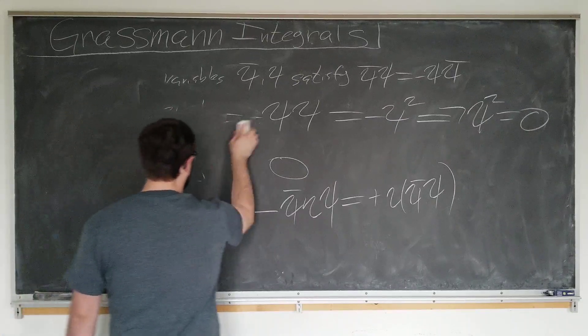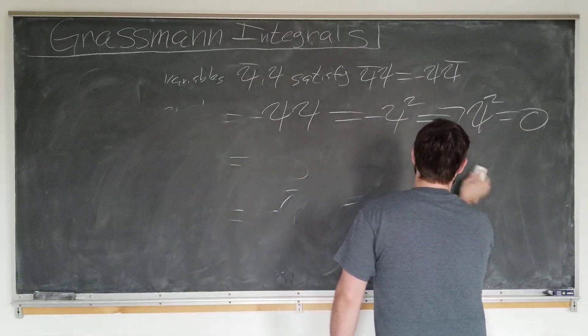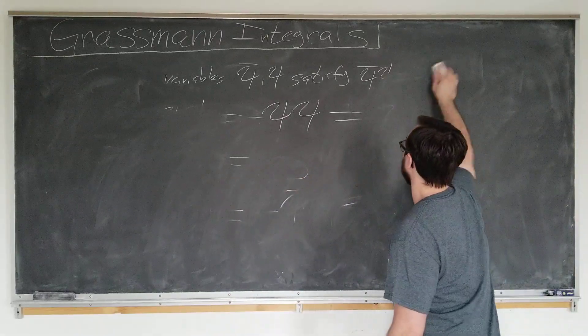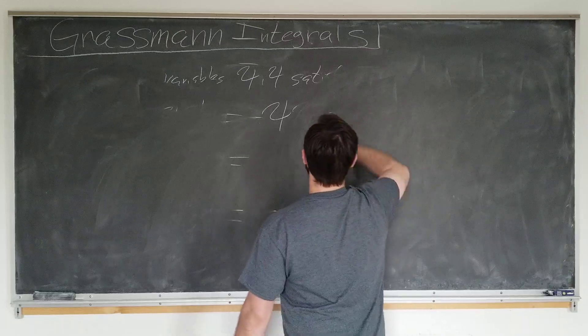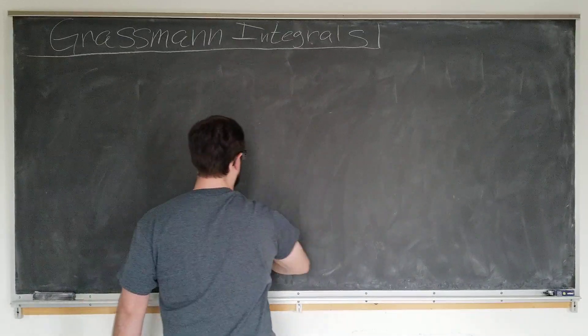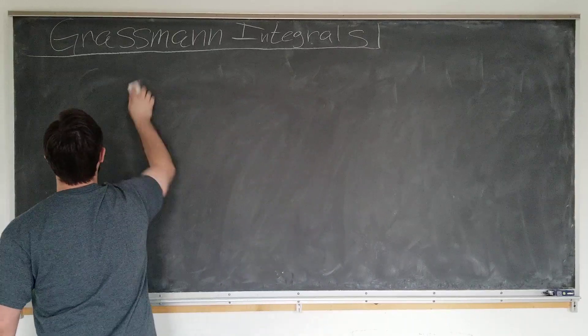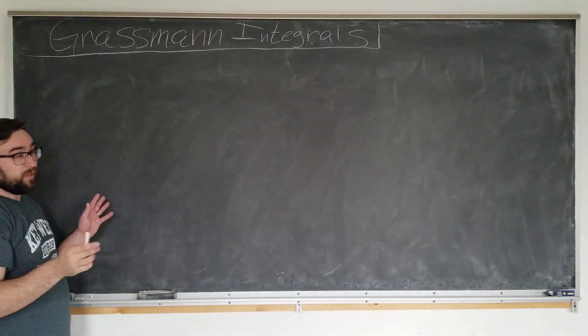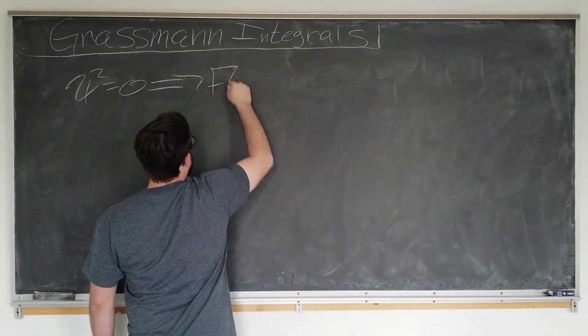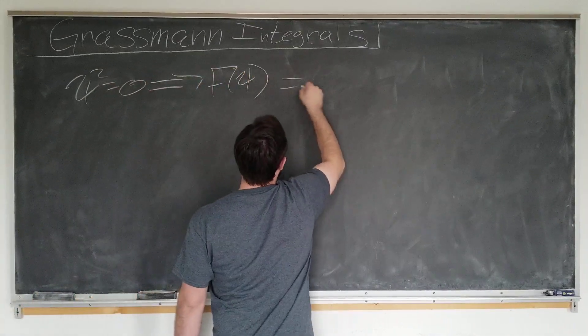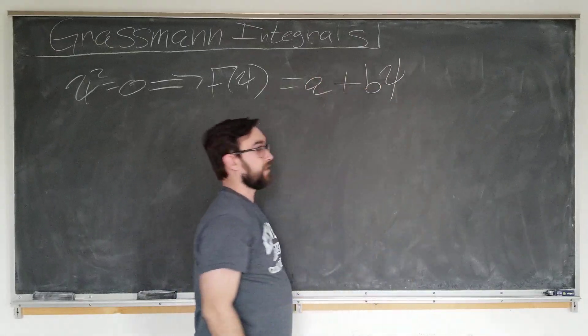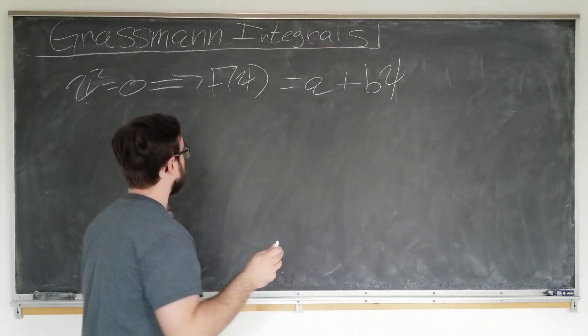Okay, that's great, you might ask, but how is this useful in any way? Well, we'll get to that. First, we're going to discuss functions of a single Grassmann variable so we can integrate it. So the property psi squared equals zero tells us that any function of psi can be expanded as a constant plus another constant times psi, since all higher order terms are zero and we have to get to real numbers somehow.